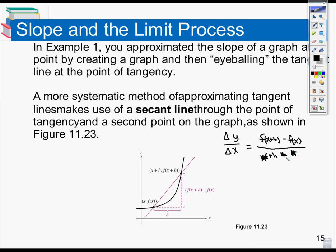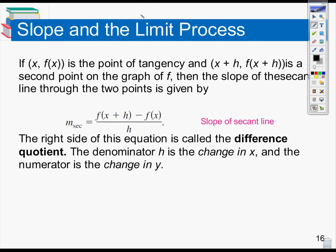This might start to look a little bit familiar to you. This is called the difference quotient, and it's a very important equation in calculus because it is used for approximating the slope of a line at a specific point. So the slope m of that secant line — the two points on the graph and the line that connects them — will be f of x plus h minus f of x over whatever that h value is.